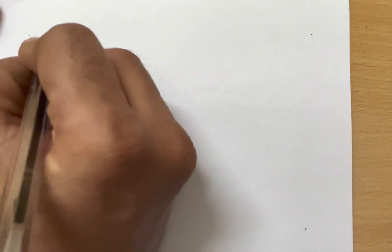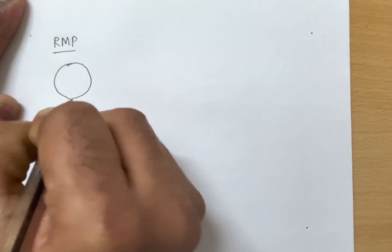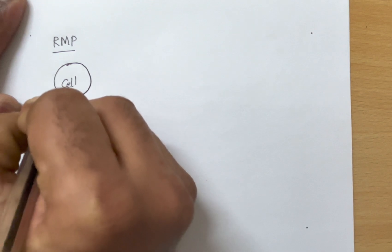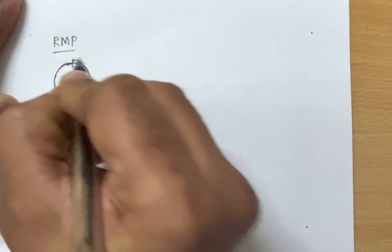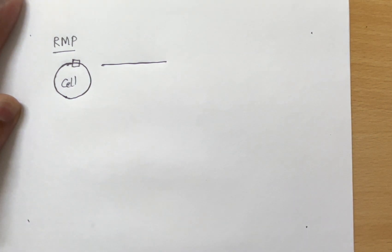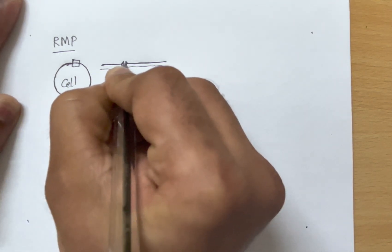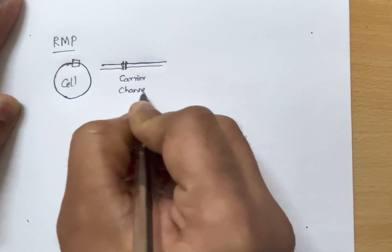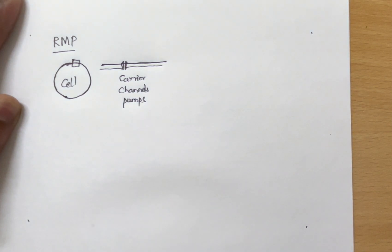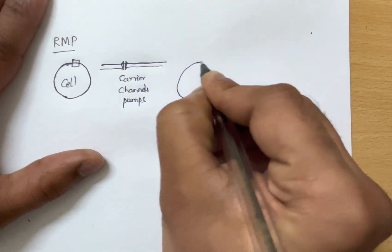This is a lecture on resting membrane potential. Consider this is a cell and this is a cell membrane — the cell membrane is the outer limiting membrane for the cell. The cell membrane is made up of a lipid bilayer and has integral proteins. These integral proteins can act like carriers and channels and pumps.